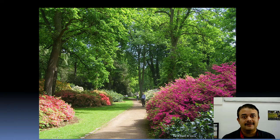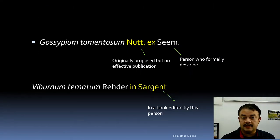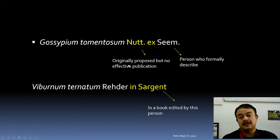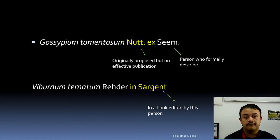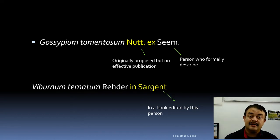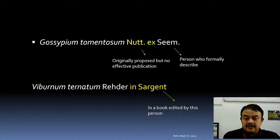Another example is Gossypium tomentosum — a cotton species. 'Nutt. ex Seem.' means Nuttall originally proposed it but without effective publication; Seeman is the person who formally described it. Still, Nuttall's name must be part of the formal species name — some credit is given even if the person didn't formally describe it. Another example: Viburnum tinantum Rehder in Sargent — it was described by Rehder in a book edited by Sargent.